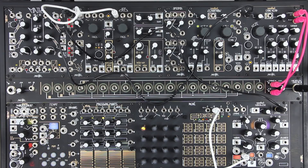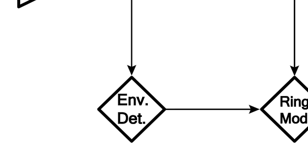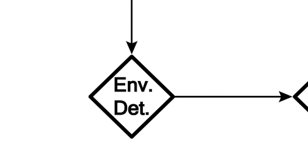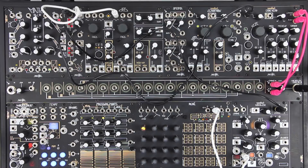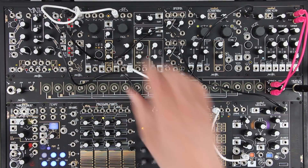Another fun way to control a carrier oscillator's pitch is using the output amplitude of the acoustic source that is being modulated. As Strange calls it, correlation of instrument dynamics and program frequency. Louder attacks create higher frequency modulations. This requires an envelope follower — see our video on using Maths as an envelope follower if you have one. But we will simply use the CV output of the Morphogene and patch it to the ExpoCV input of the oscillator.